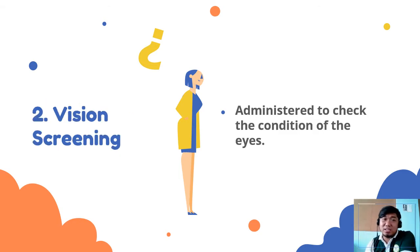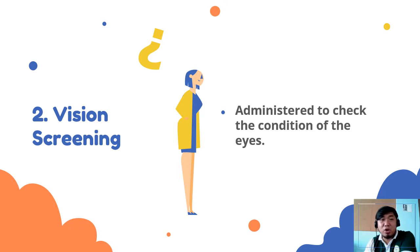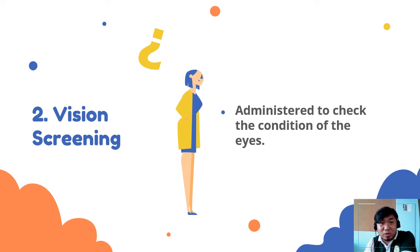Second is the vision test. Napakahalaga na malaman natin ang kondisyon ng ating mata. The internal structures of the eye are observed by the doctor through an ophthalmoscope. You can also undergo a visual acuity test where the Snellen chart is used. Ito ay para malaman kung kailangan mo na ng salamin sa mata.